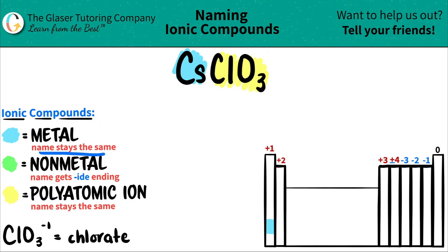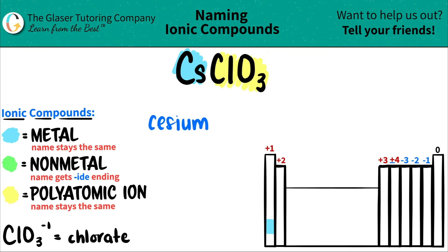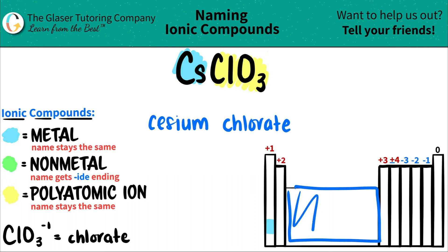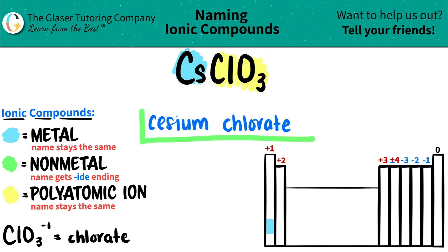The metal name always stays exactly the same, so Cs — I'm just going to write cesium. The polyatomic comes next, and polyatomic ion names always stay the same, that's why you just have to memorize them. ClO3 is chlorate, so I'm just going to write chlorate. Since it's an ionic compound, we just have to make sure: do I need a Roman numeral in the middle or not? Roman numerals come from transition metals, but since cesium is in group one, it's not part of the transition metals. So we're done — CsClO3 is cesium chlorate.